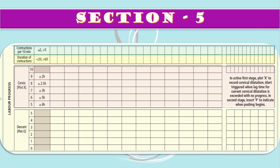For the cervical plot, perform a gentle vaginal examination after obtaining the woman's consent and ensuring privacy. During the first stage, if labor progresses as expected, assess cervical dilatation every four hours. Alert values for the first stage: 5 cm — more than 6 hours; 6 cm — more than 5 hours; 7 cm — more than 3 hours; 8 cm — more than 2.5 hours; 9 cm — more than 2 hours indicate alert signs.